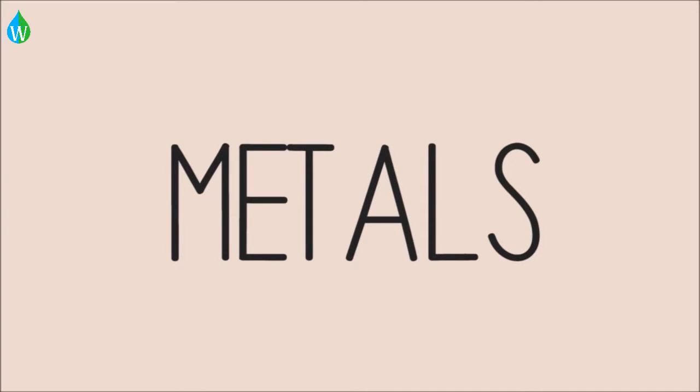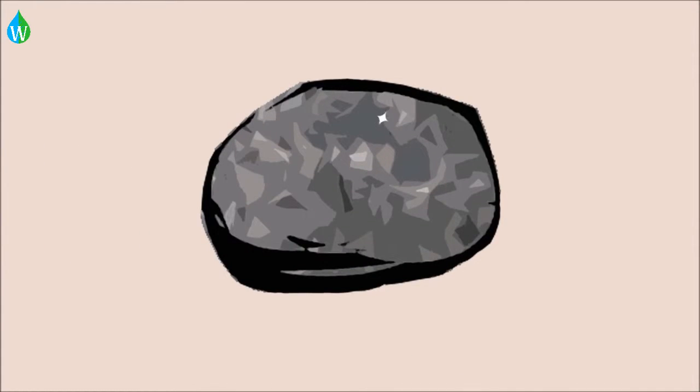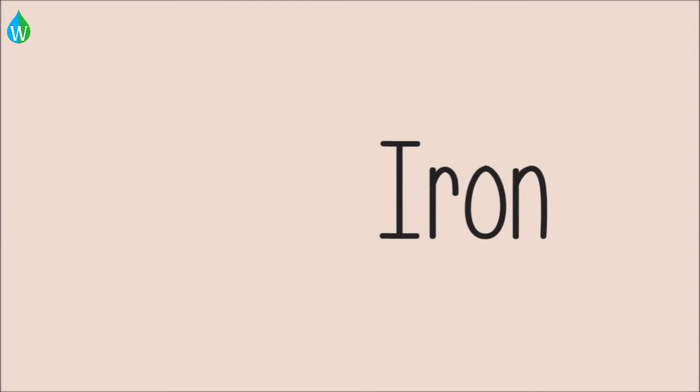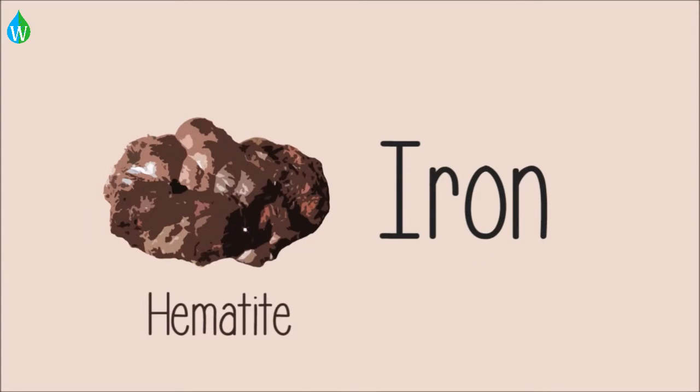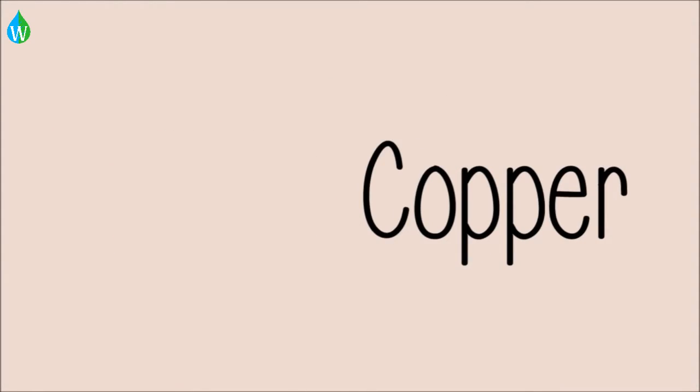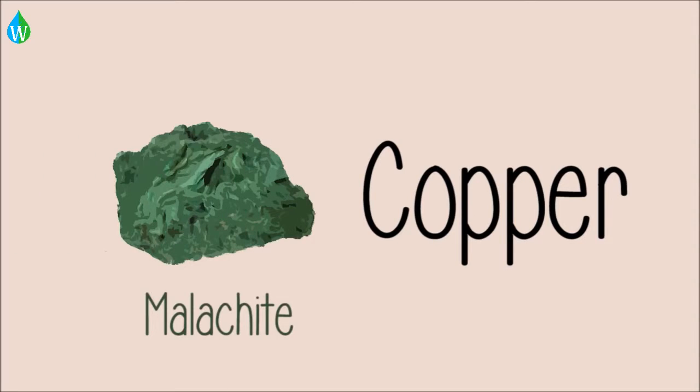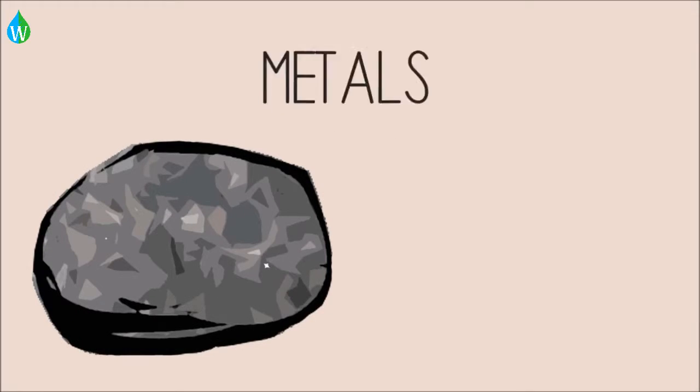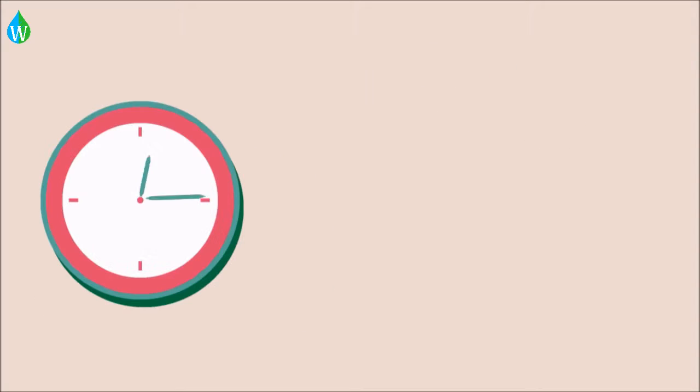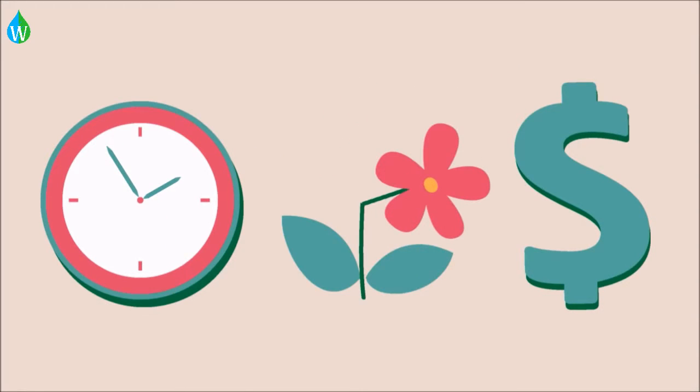Certain metals can be extracted from their ores. For example, iron is extracted from hematite in a blast furnace, and copper can be extracted from malachite. The process of extracting metals from their ores can be time-consuming, costly, and harmful to the environment.